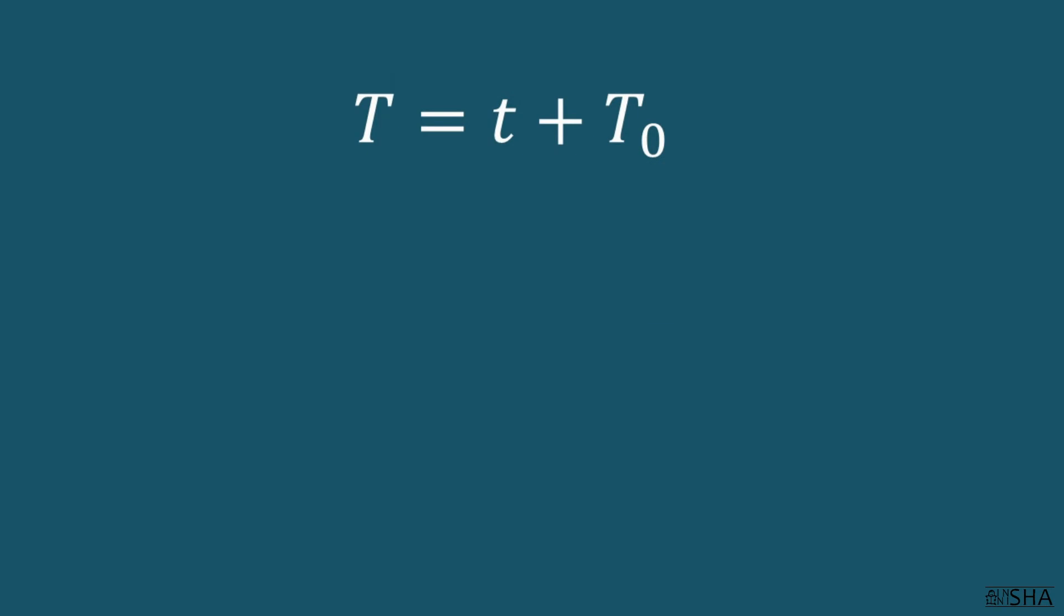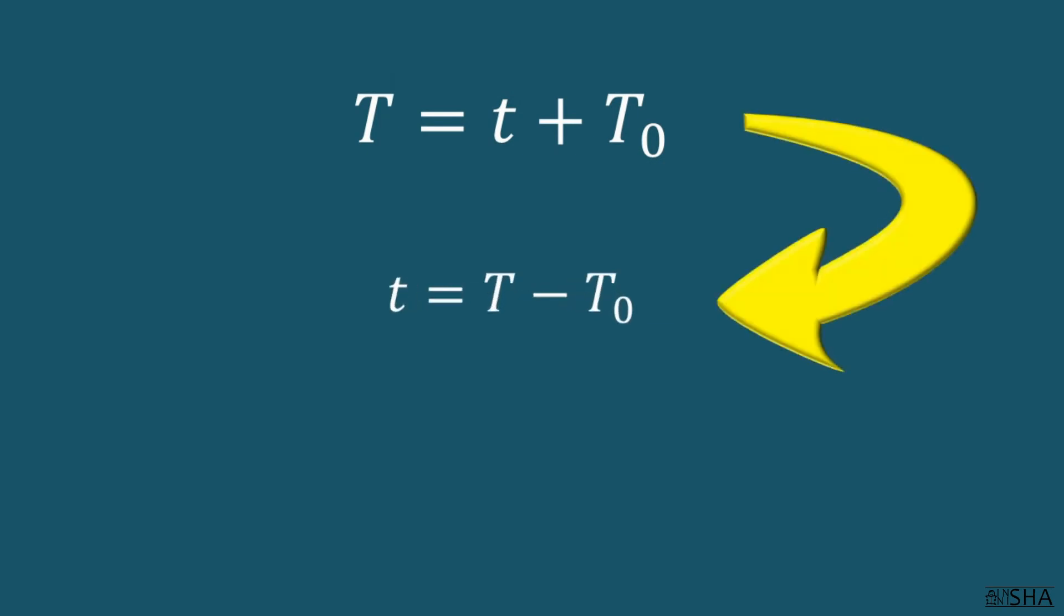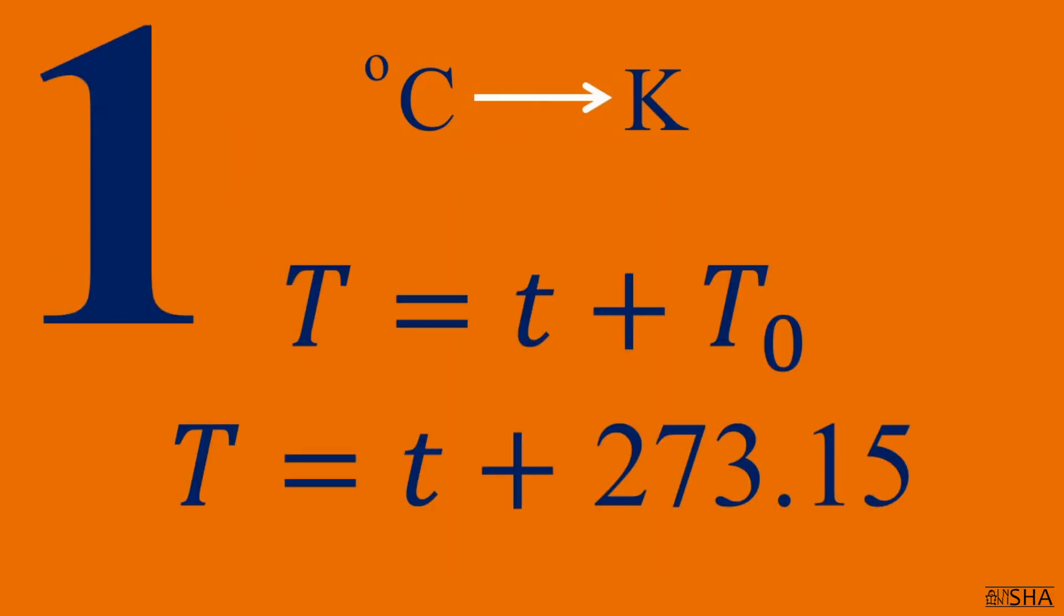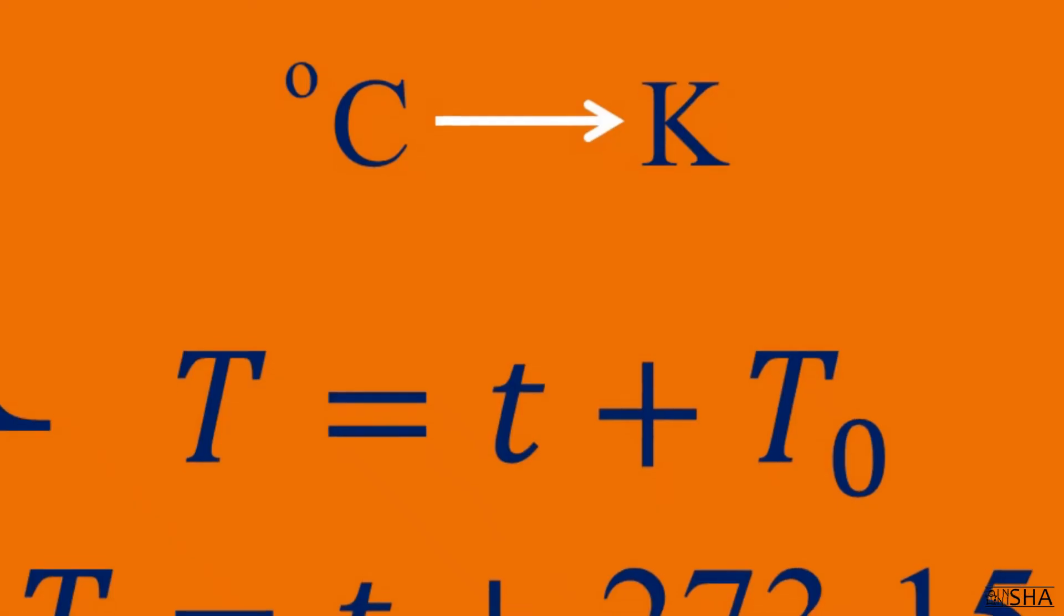And knowing math rules we can easily get the second formula. Look: big letter T is Kelvin temperature, small t is temperature in degrees Celsius, and T₀ is a constant. It equals 273.15 or you can round up and use simply 273. That's it, we are ready to convert. Put the corresponding values into the formulas and the answer is ready.